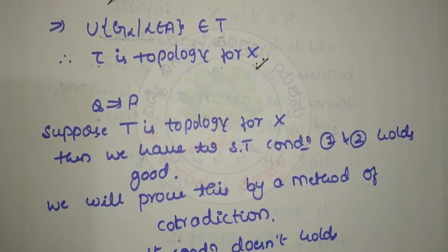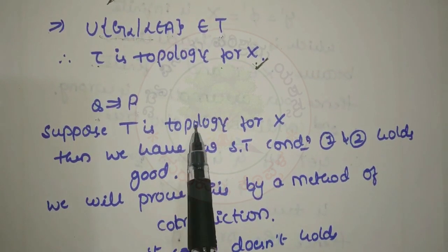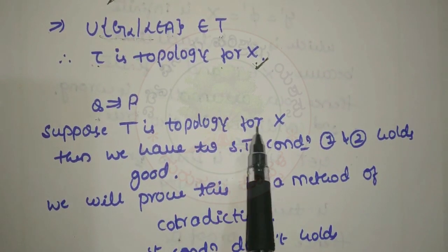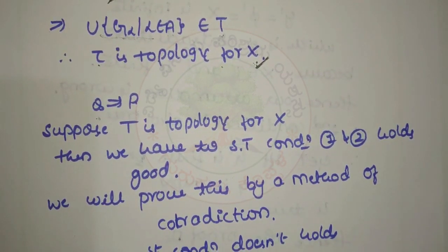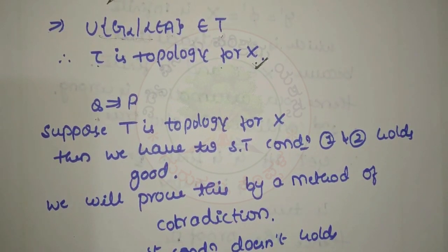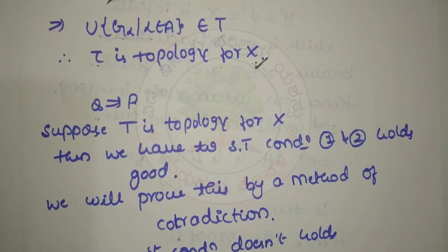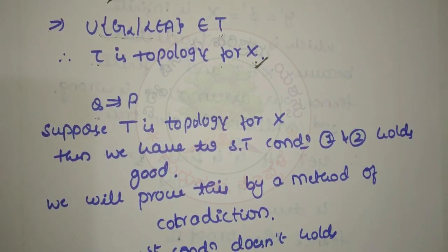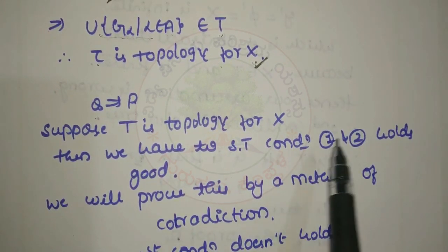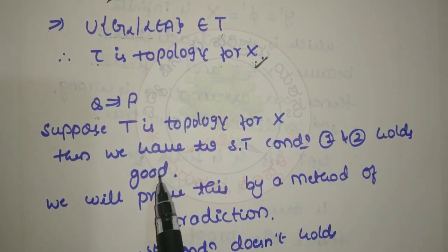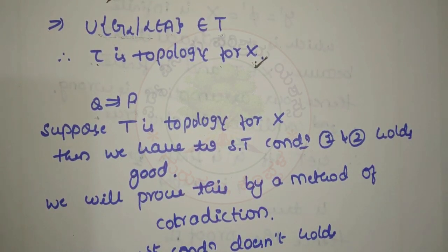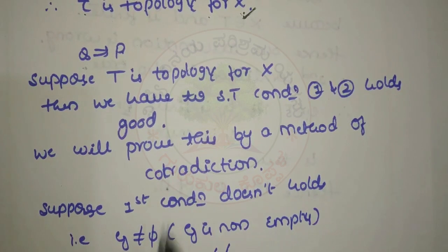Q implies P: if T is a topology on X, we need to show that conditions 1 and 2 hold — that is, G is empty or G' is finite. We will use the method of contradiction to prove this.